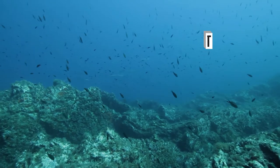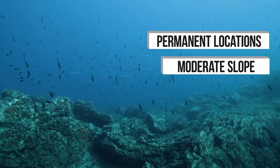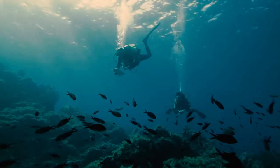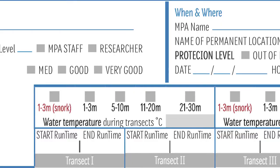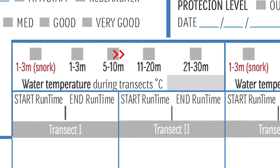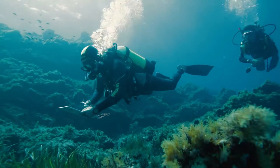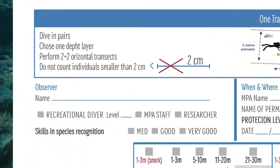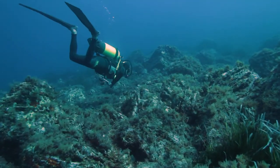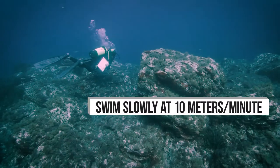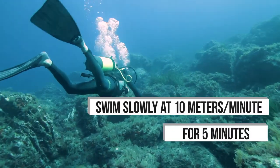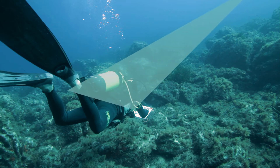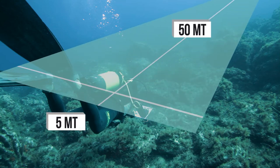Be sure to have an underwater watch with you. Censuses will be performed at permanent locations over rocky bottoms with a moderate slope, preferably without or with few seagrass. First, we choose a depth range — for example, 11 to 20 metres — then we start counting the fish, taking note of the start time. Transects are performed at a very slow speed of 10 metres per minute for five minutes, recording target fish observed in an ideal transect 50 metres long and five metres wide.